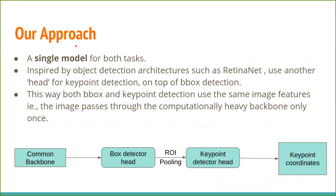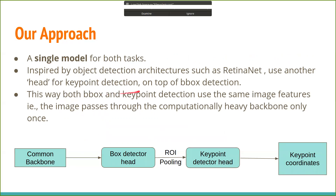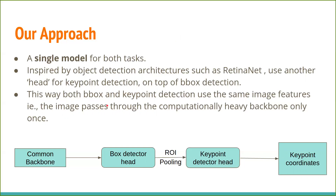Coming to our approach, we use a single model for both tasks. The idea is to use a head for key point detection on top of popular object detection architectures such as RetinaNet, which use heads for bounding box detection. In this way, both the bounding box head and the key point detection head use the same image features generated by a common backbone, so the image passes through the computationally expensive backbone only once.